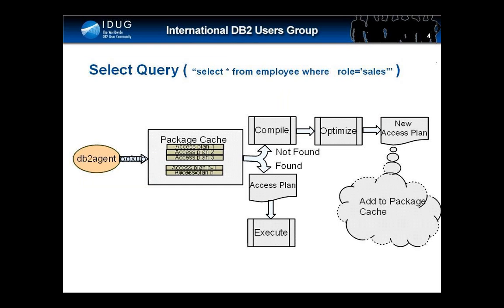The DB2 agent, once it receives the query, first looks up the package cache to see if there is a compiled copy of the query. If there is one, it uses that compiled query and follows the access plan specified in it. If it does not find a compiled copy, the query is put through a query compiler and an optimizer, and an access plan is generated. This is inserted into the package cache, and the DB2 agent then proceeds by following the steps in the access plan to retrieve the data that satisfies your query and stream it to your application.